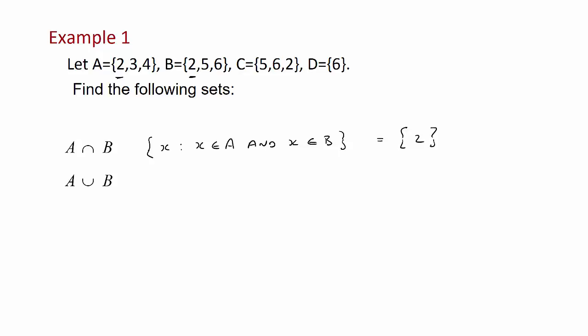The set where the members belong to A or B. The U shape symbol means or. Again looking at the general definition we've got typical member X. So X is a member of A or X is a member of B. Remember or includes and. So here we've got A: 2, 3 and 4. B: 2, 5 and 6. So 2 is common to both but we only count it once. So our set A or B would be 2, 3, 4, 5, 6.